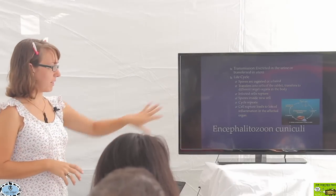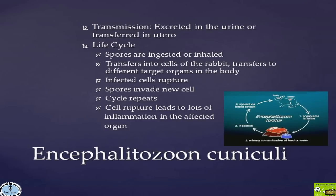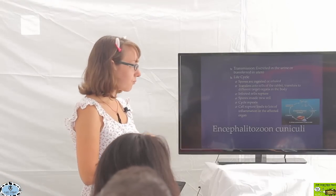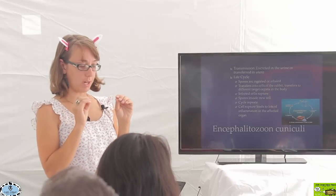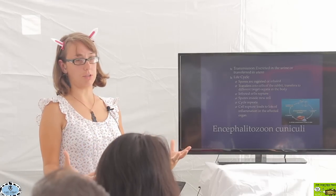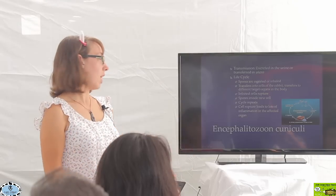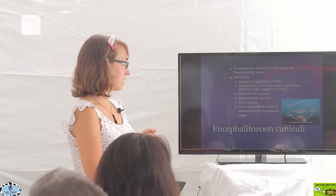Here's a description of how the whole life cycle process occurs. They either ingest or inhale the organism. It then goes into the cells of the rabbit and transfers to the target organs. The kidneys and the nervous system are the target organs, the areas where it likes to go. How it causes disease is when the organism gets inside the cell, it causes that cell to rupture.